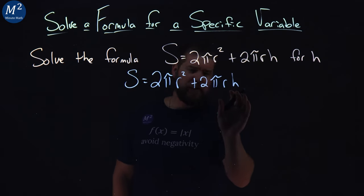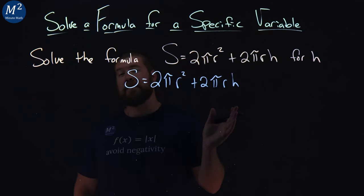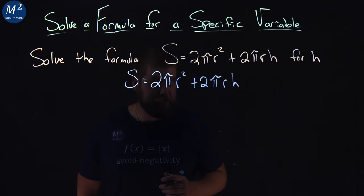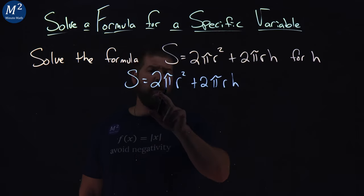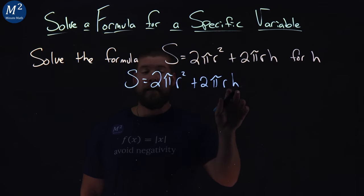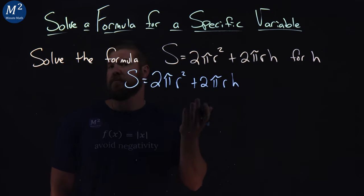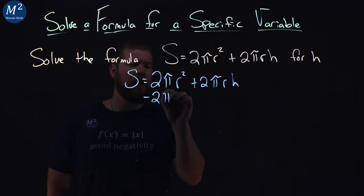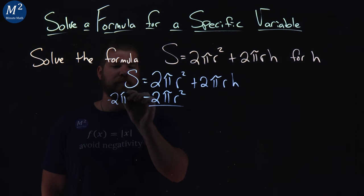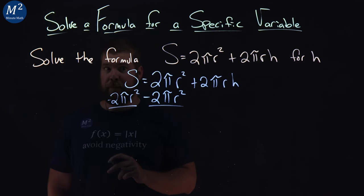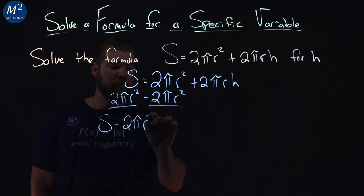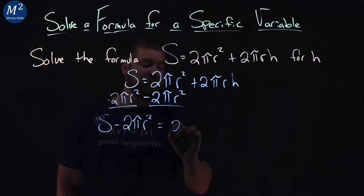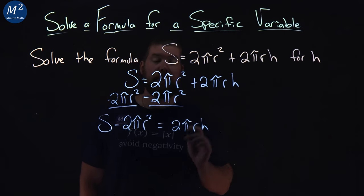I want to get H by itself, so I'm bringing everything over to the other side of the equation. What we do on one side we have to do to the other. We have 2πR² being added to 2πRH. The opposite of addition is subtraction, so subtract 2πR² from both sides. Not too bad. This comes out to be S minus 2πR² equals 2πRH.